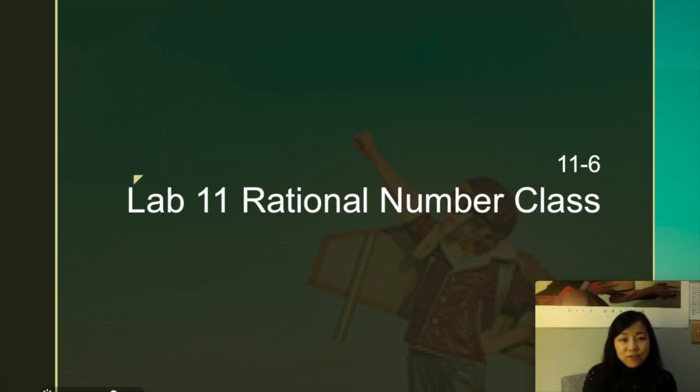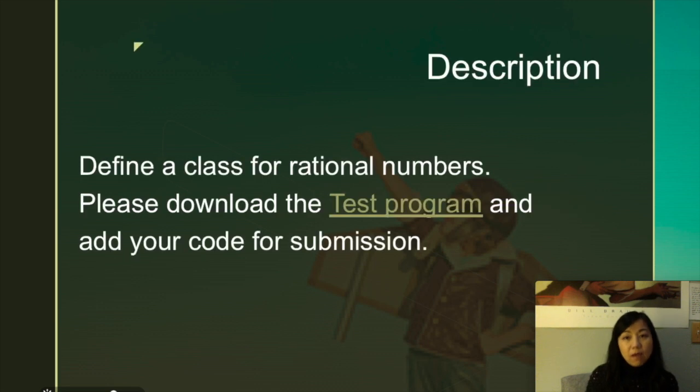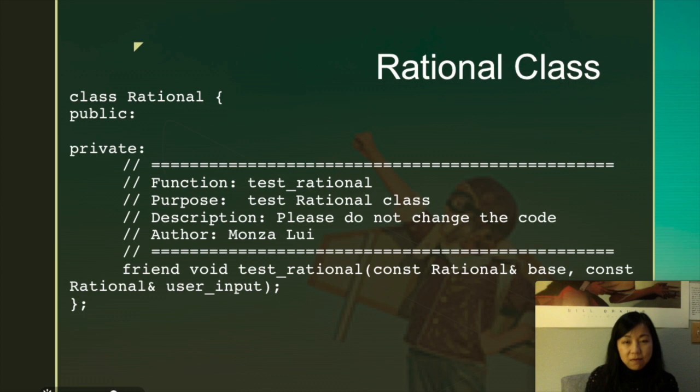Hi class. So let's talk about the lab rational number class. To define a class for rational number, you are going to download the test program that I have provided such that I can actually test your program easier. Without having to make it too complicated, I think this is the best way to do it is to just use my skeleton rational.